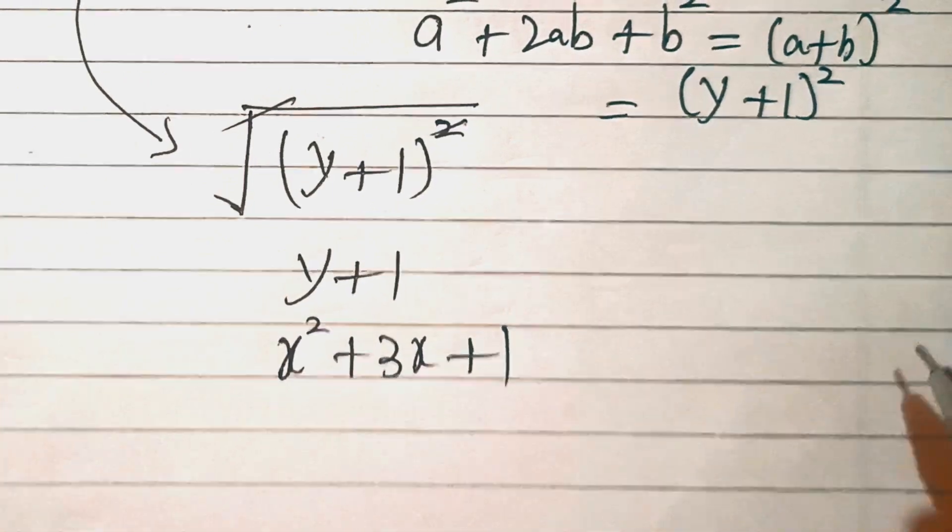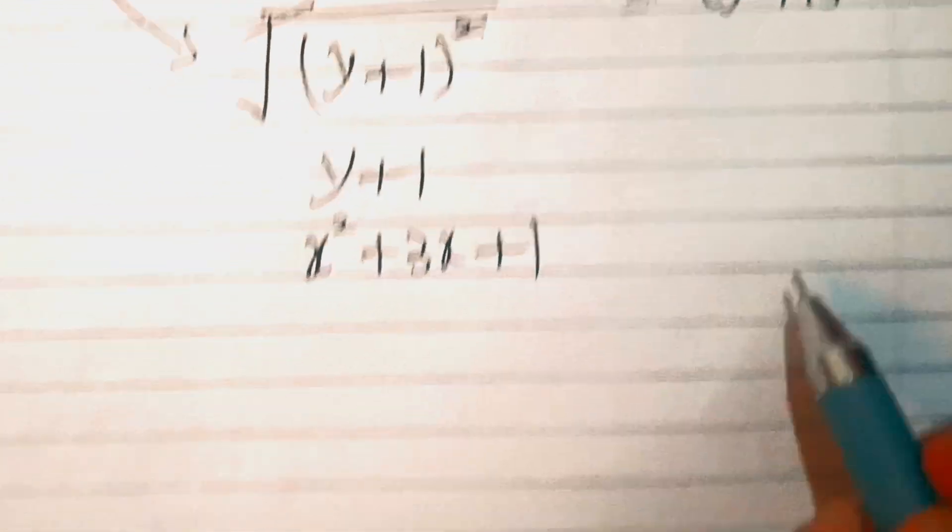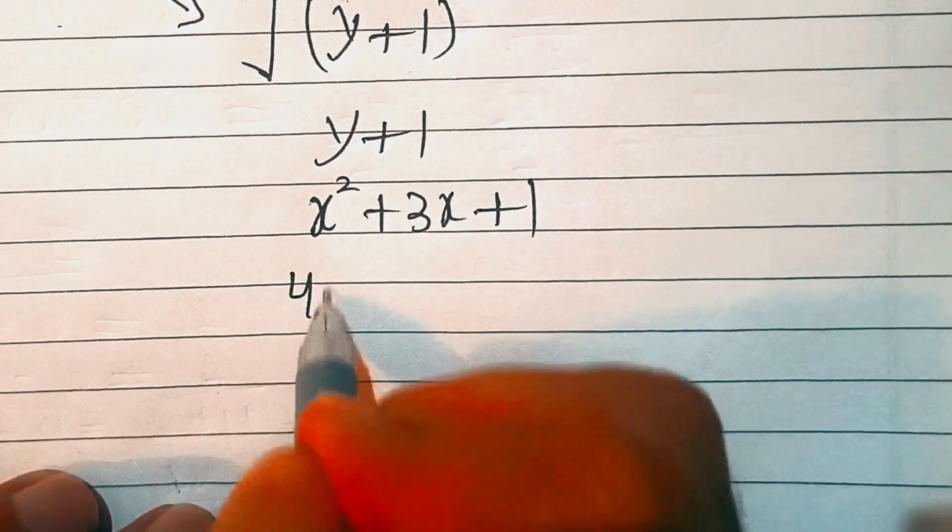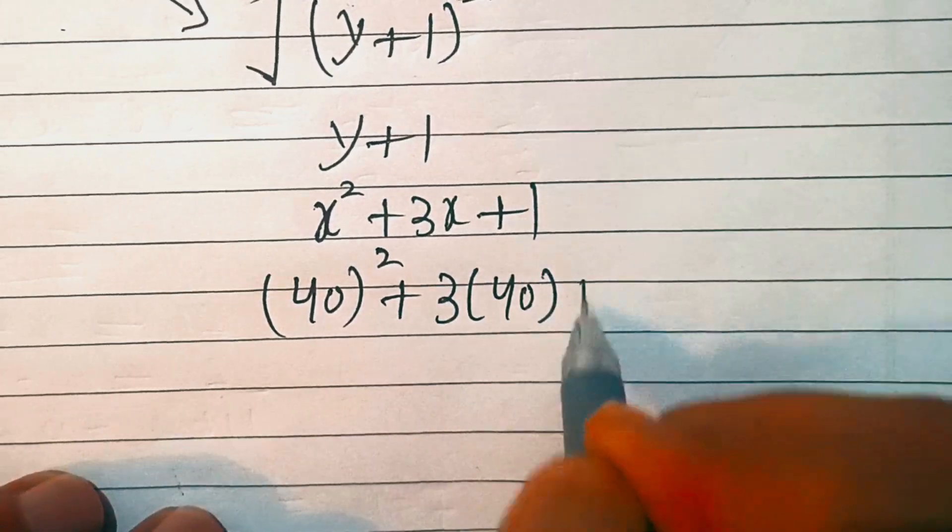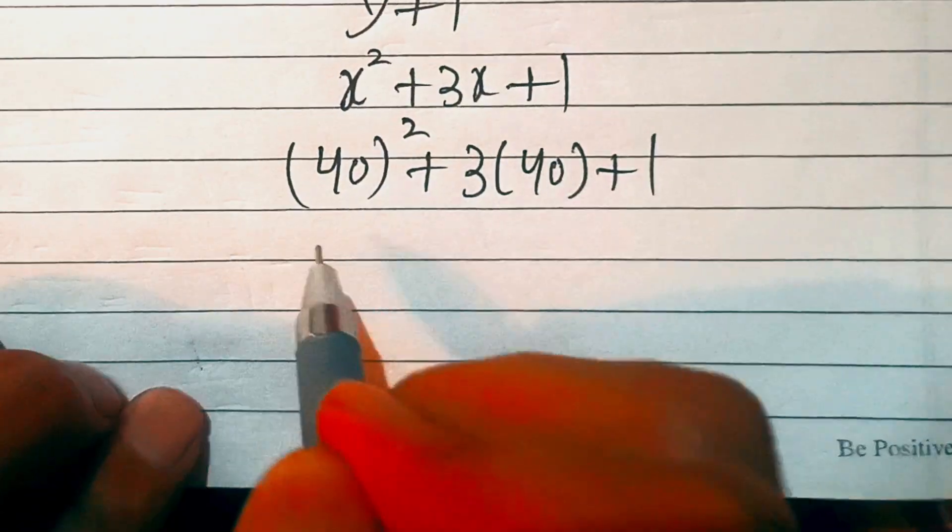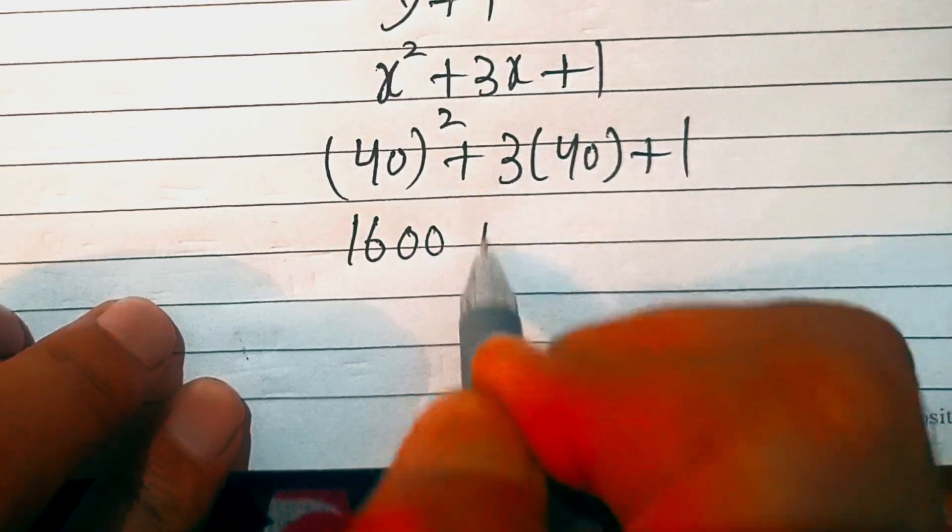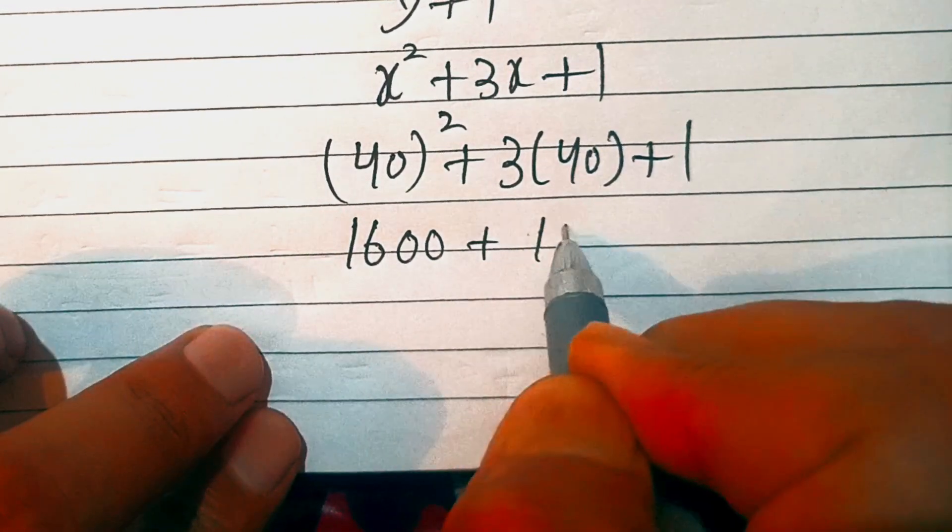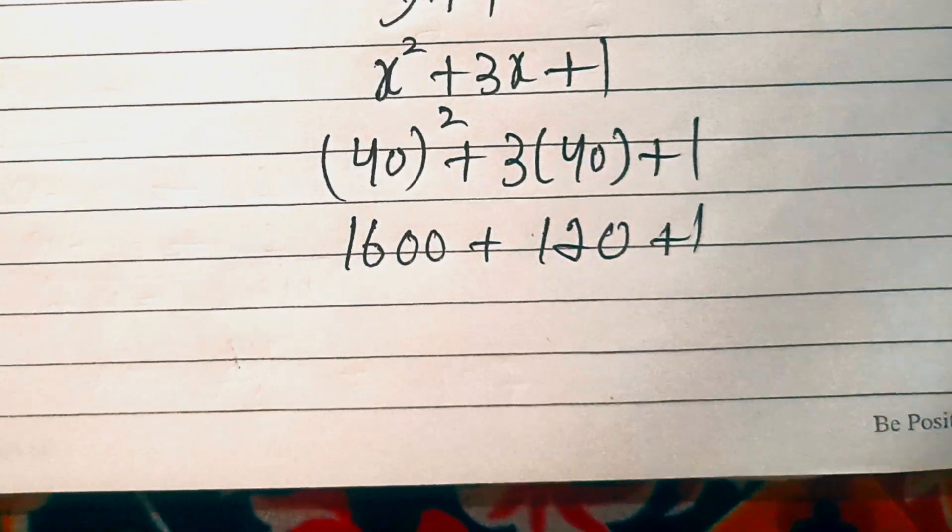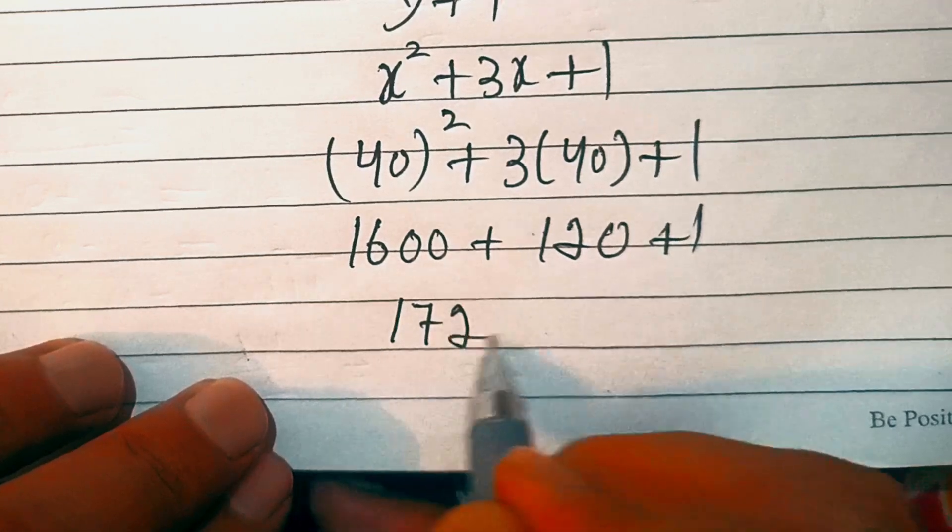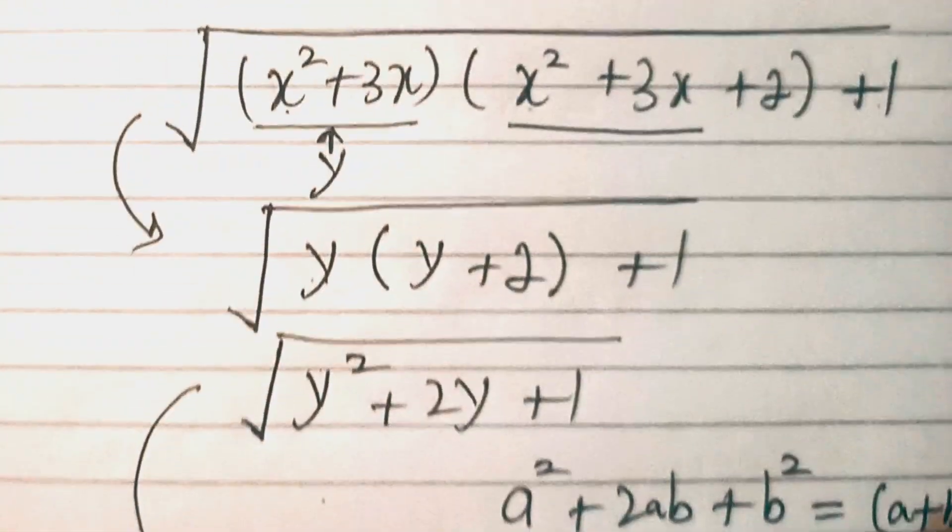The value of x was 40, so this is 40 squared plus 3 times 40 plus 1. Now 40 squared is 1600 plus 3 into 40 is 120 plus 1, which equals 1721, which is the solution of the required problem.